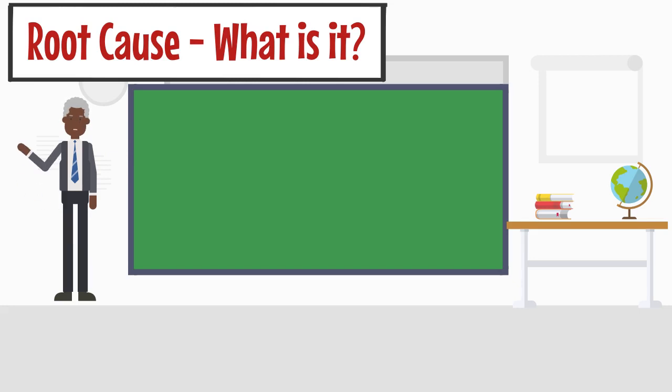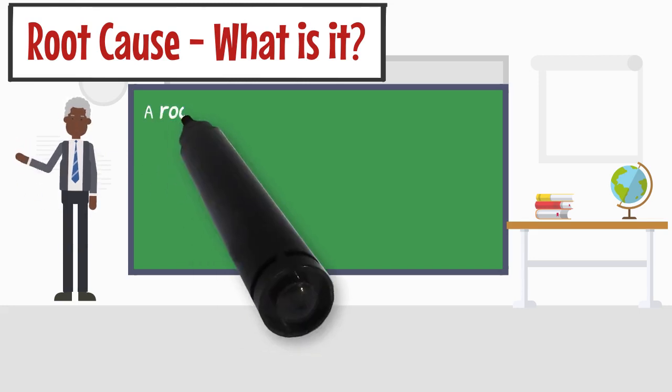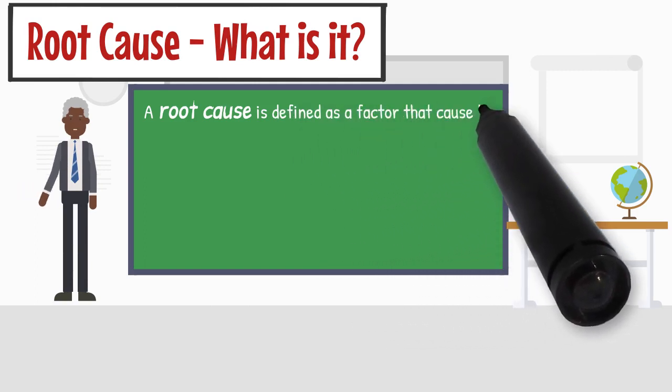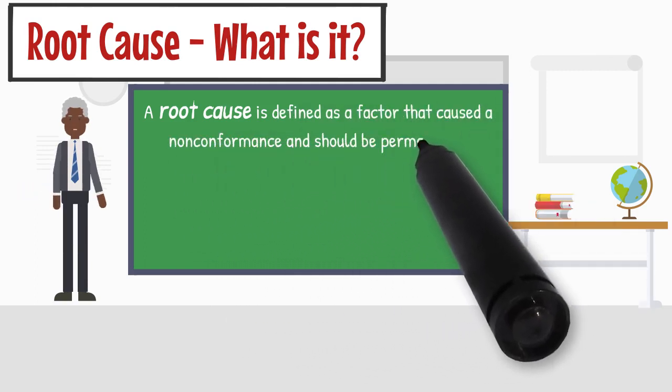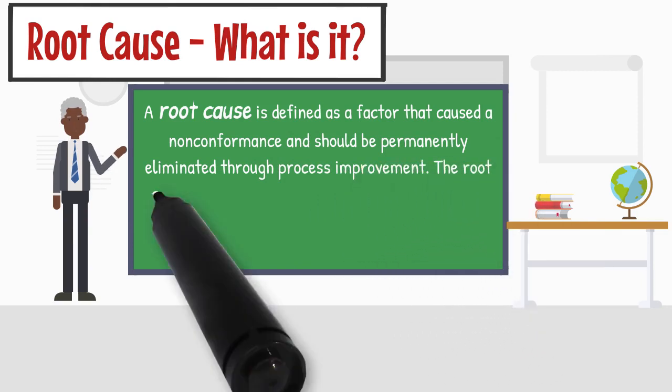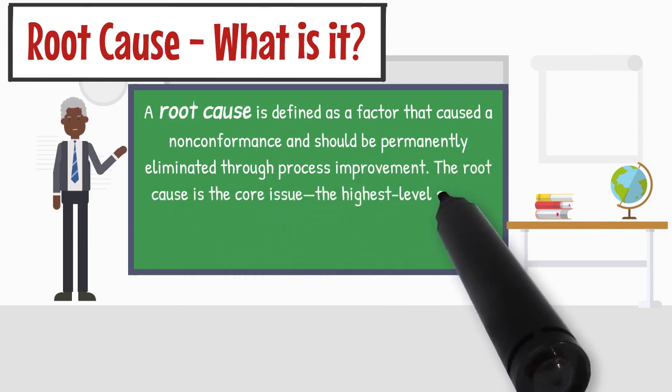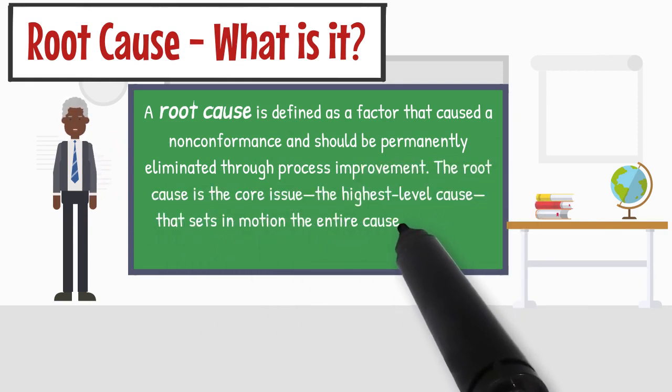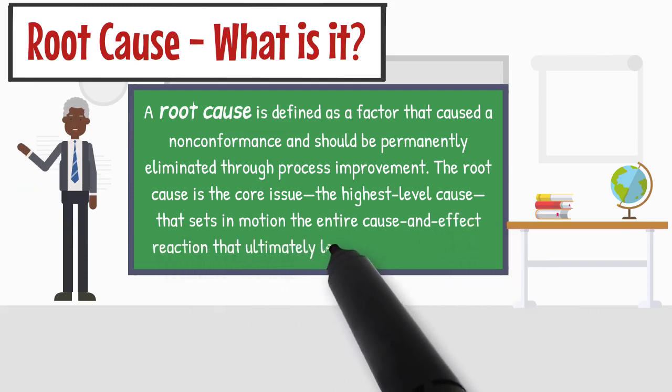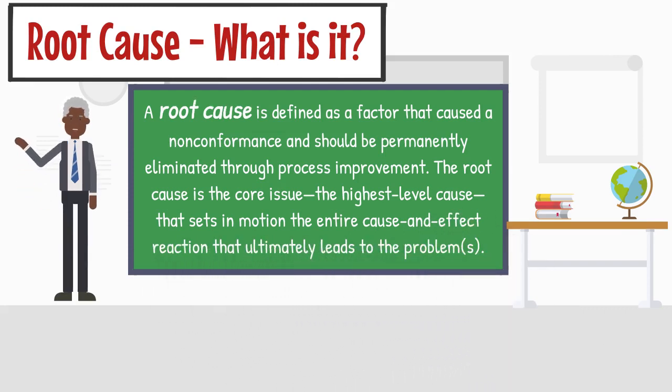Later we will understand what it means with the help of an example. A root cause is defined as a factor that caused a non-conformance and should be permanently eliminated through process improvement. The root cause is the core issue, the highest level cause that sets in motion the entire cause and effect reaction that ultimately leads to the problem.